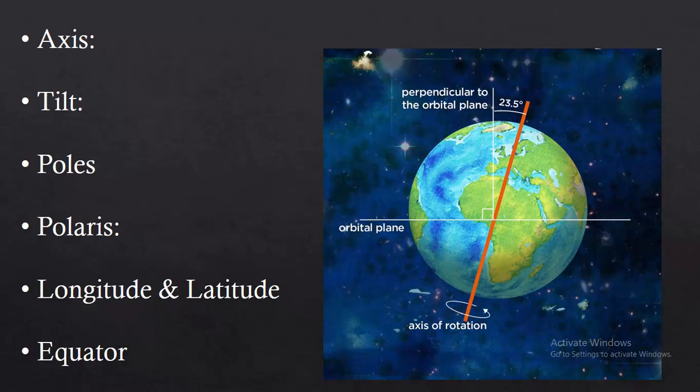This tilt is what gives us seasons. The third one is Poles. Geographically, the poles are divided into two categories: the north pole and the south pole. Both are divided up to 90 degrees — 90 degrees north is the north pole, and 90 degrees south from the equator is the south pole. These are also known as the magnetic poles. Now, what is Polaris? The direction of the north pole is pointed towards a pole star. That's why it is called Polaris.